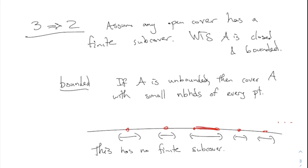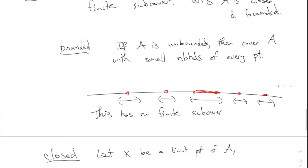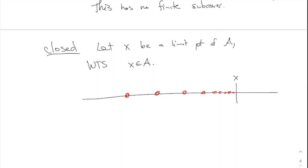What about the closed part? Closedness is about limit points — we have to explain why every limit point is part of the set. Let X be a limit point of A; I want to show that X is in A. The picture is: my set has a bunch of values which approach some point X, and I want to show that that last point actually needs to be in the original set. We have to show this using covers and subcovers.